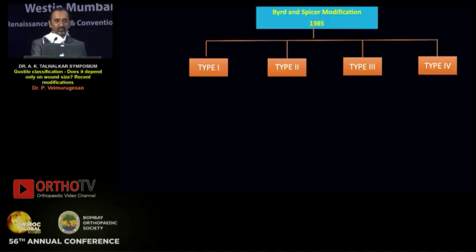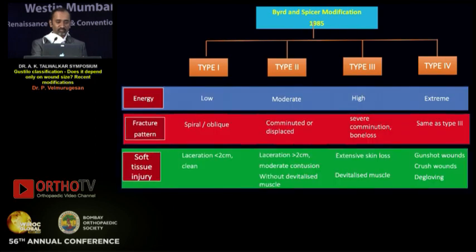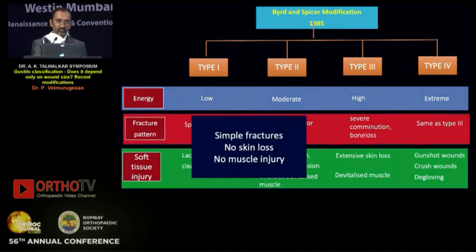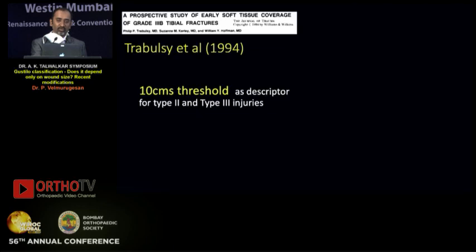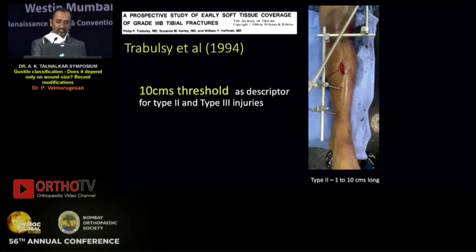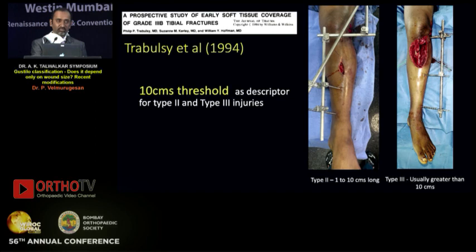Various modifications to Gustilo-Anderson classification have been made since then. Bride and Spicer divided it into four types based on energy level, fracture pattern, and soft tissue injury — the first two being simple fractures with no skin or muscle loss, type 3 with skin loss and devitalized muscle, and type 4 for gunshot and farm injuries. Trubulski brought in the 10-centimeter threshold to differentiate type 2 and type 3 injuries, with type 2 defined as 1–10 cm and type 3 as greater than 10 cm. This 10 cm descriptor is often attributed to Gustilo but was actually described by Trubulski.